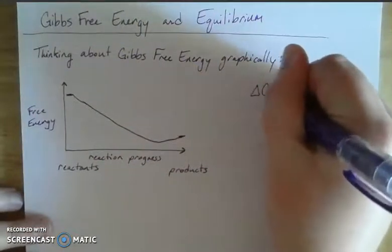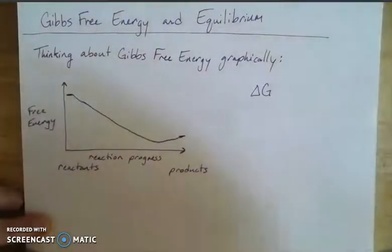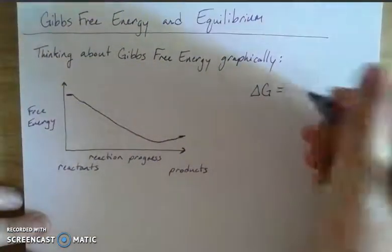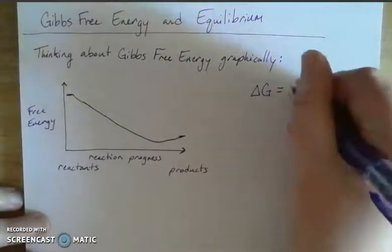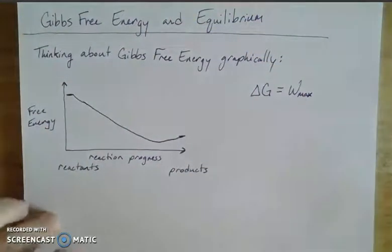So the change in Gibbs free energy. And of course, we as scientists are usually interested in the change of states. How something changes over time is more interesting than the state of affairs currently. So this is equal to the work, the maximum amount of work that can be done. You could think about this as the maximum useful work.